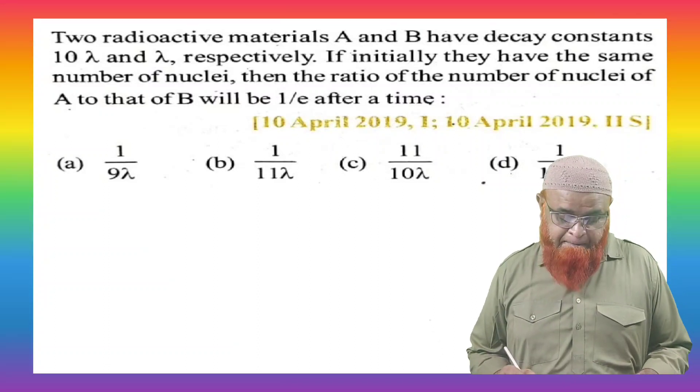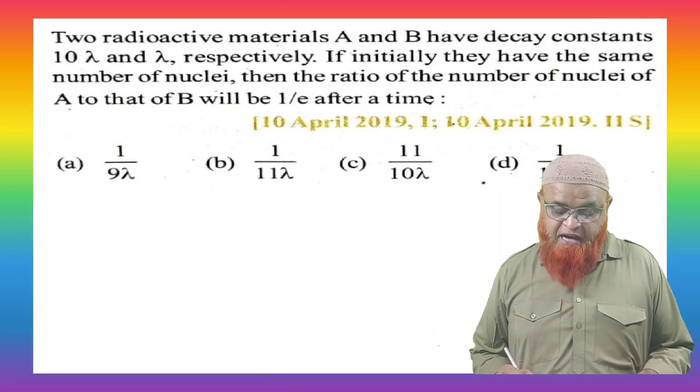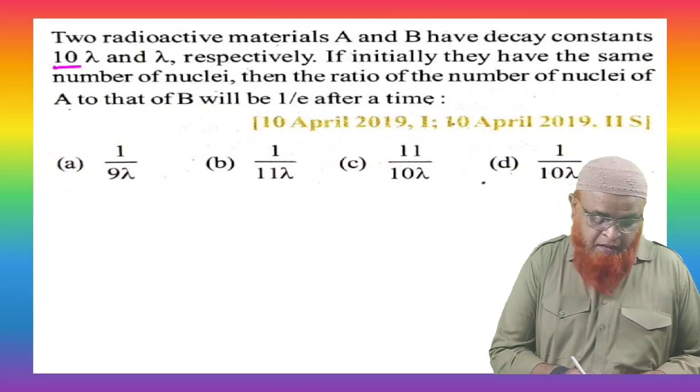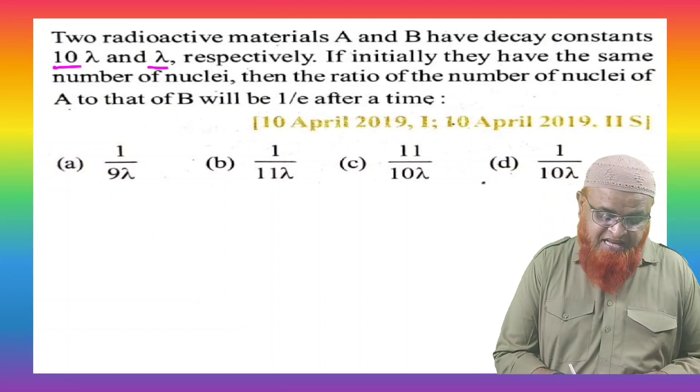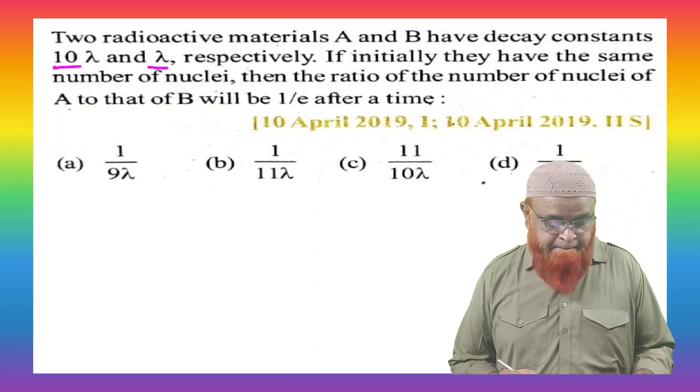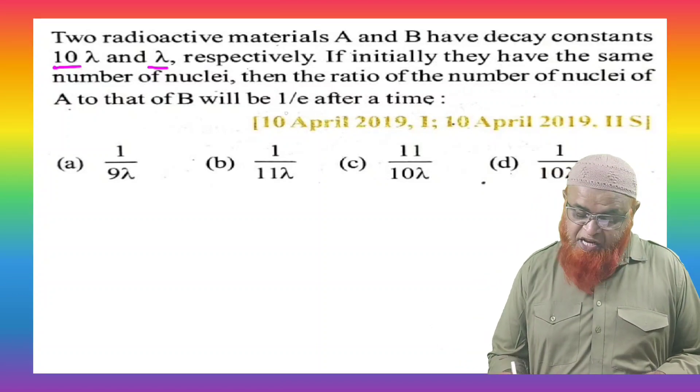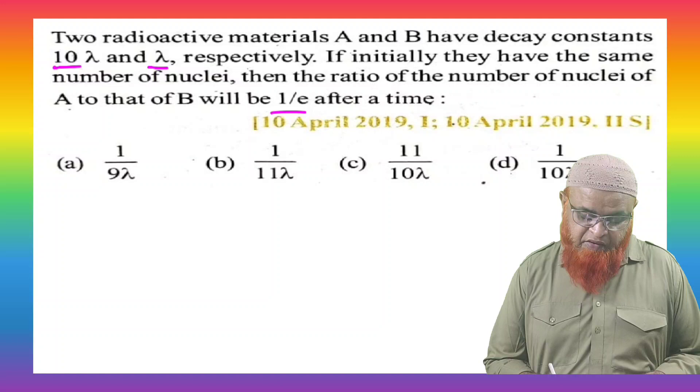You can see this problem. Two radioactive substances A and B are given. The radioactive decay constants are given as 10 lambda and lambda. And it is also given that the ratio of the number of nuclei is given as 1 by E.